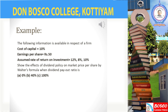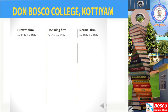Walter's model for dividend decision can be best explained with the following example. The following information is available in respect of a firm: cost of capital = 10%, earnings per share = ₹50, assumed rate of return on investment = 12%, 8%, and 10%. We have three payout ratios: A = 0%, B = 40%, and C = 100%. We have three internal rates of return: 12% (growth firm), 8% (declining firm), and 10% (normal firm). We will calculate the market price under each payout ratio.